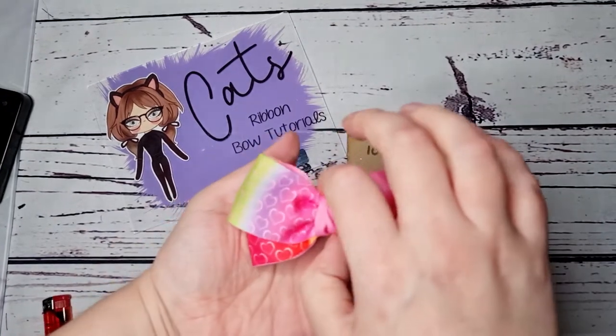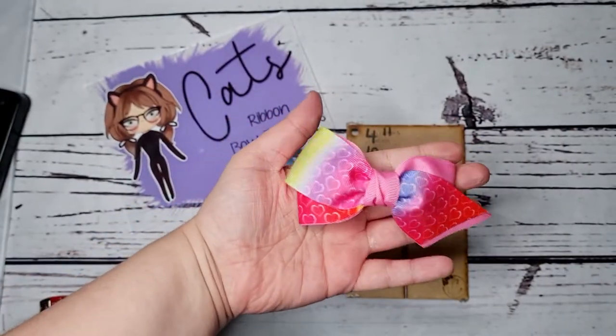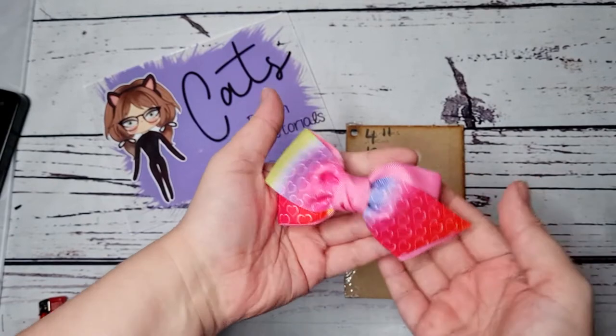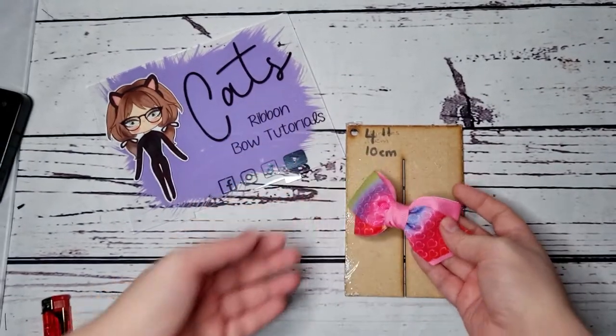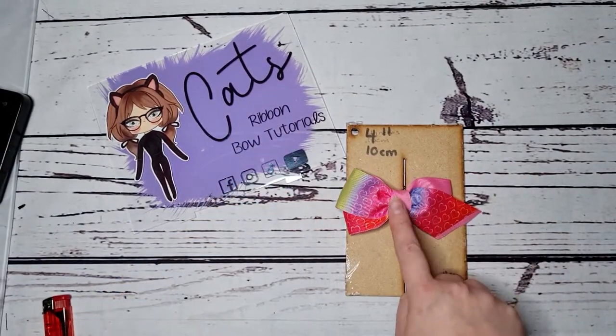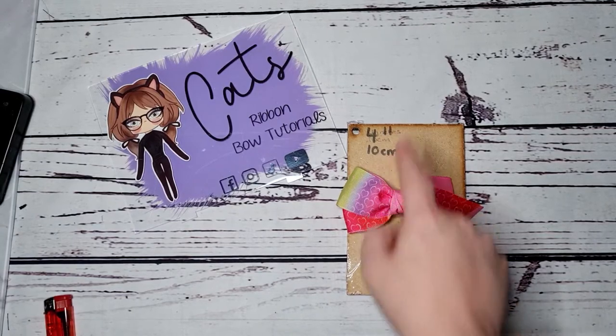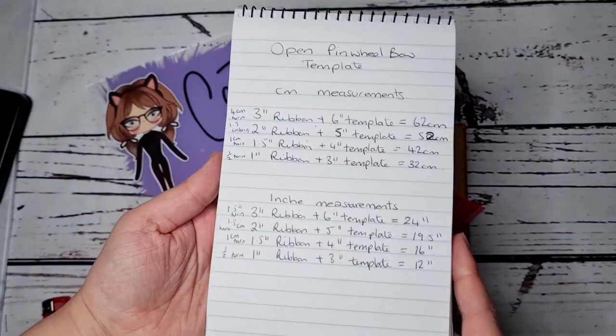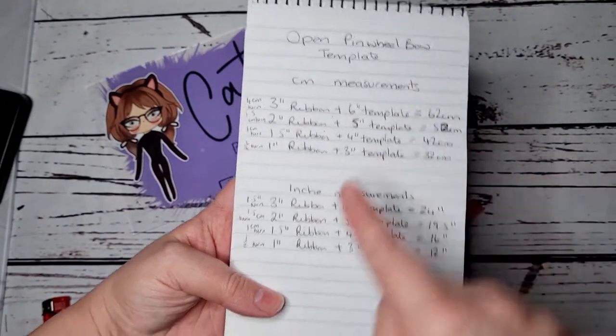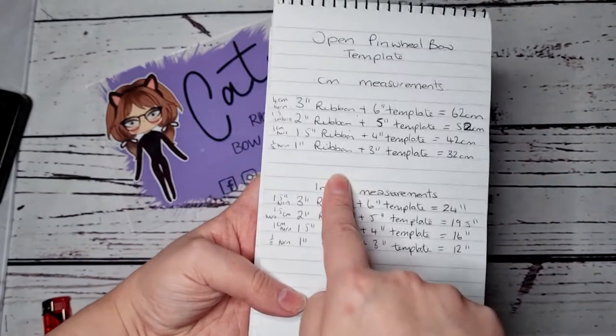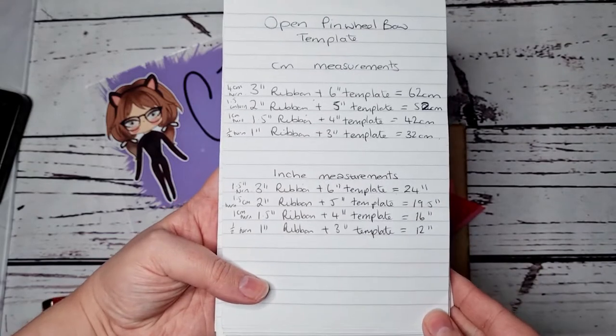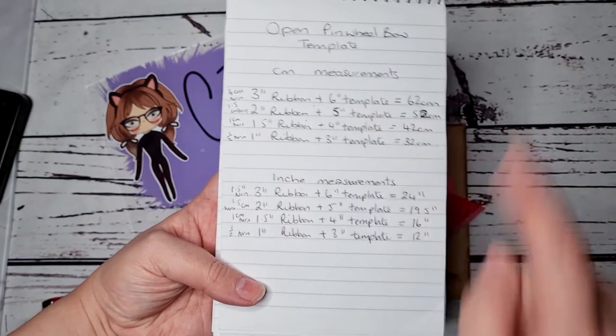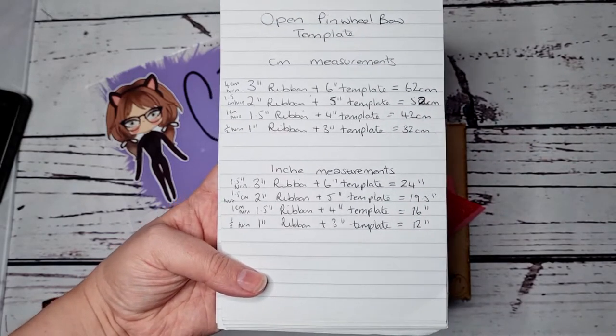Hi everyone, today I'm going to show you how to make this 1.5 inch ribbon version of the open pinwheel using the templates rather than freehand. On the 1.5 inch ribbon it's the 4 inch template and these will all be in the description below, but I've got the sizes for centimeters and inch measurements from 3 inches down to 1 inch. Had to adjust that one because I had to work on my sizing but those will all be in the description for you.